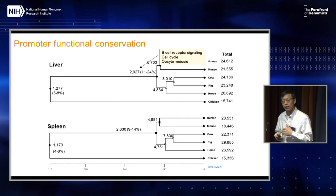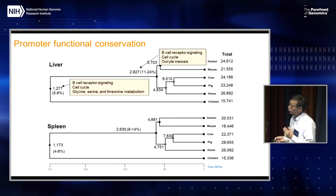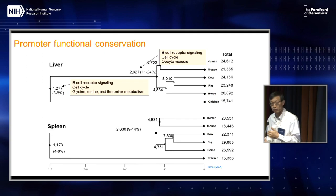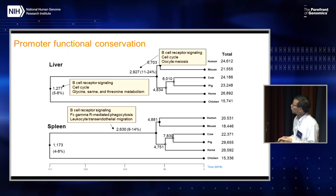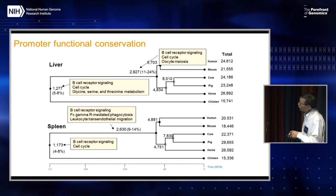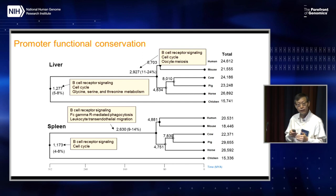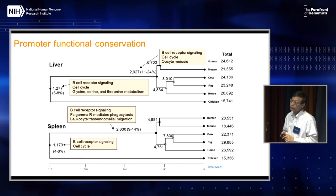If we look at which genes are nearby those functionally conserved promoters, you will see things like BCL receptor signaling and cell cycling across all mammals. Between mammals and birds, you still see BCL receptor and cell cycling, and also glycine-serine pathways. In the spleen, you see similar patterns — BCL signaling. Between mammal and bird in spleen, you see similar patterns of cell cycle and BCL receptor. We don't see much difference between liver and spleen for the promoters — they seem to have similar conservation patterns.